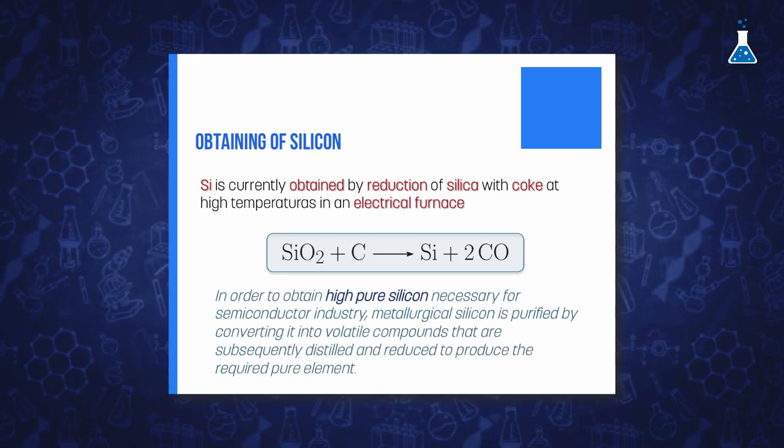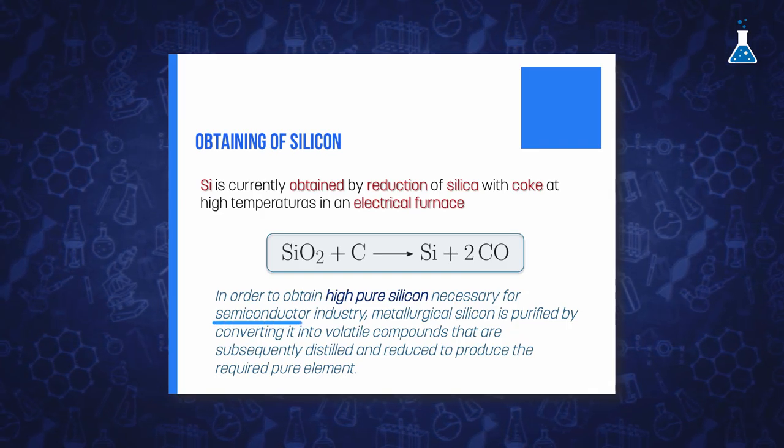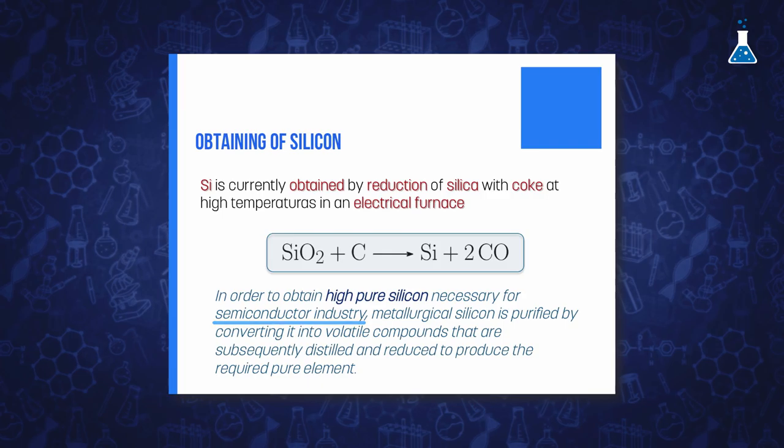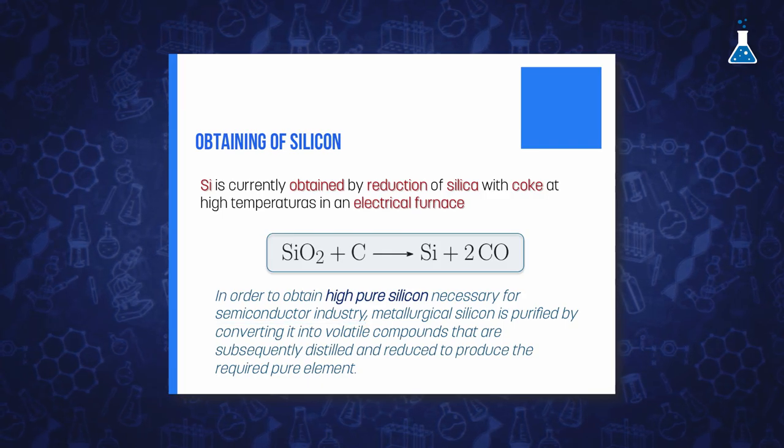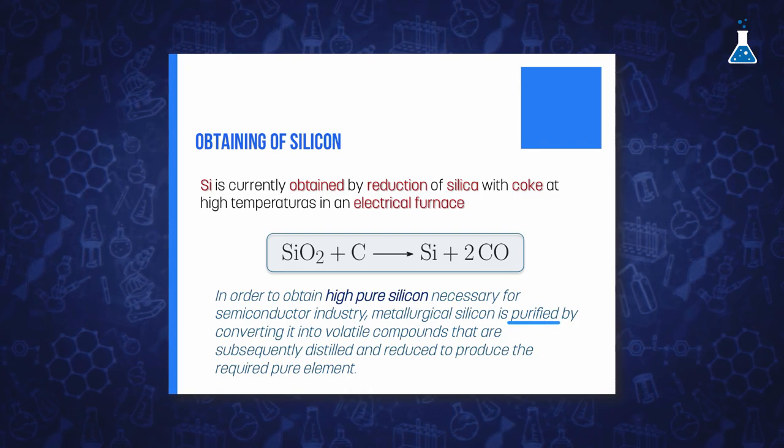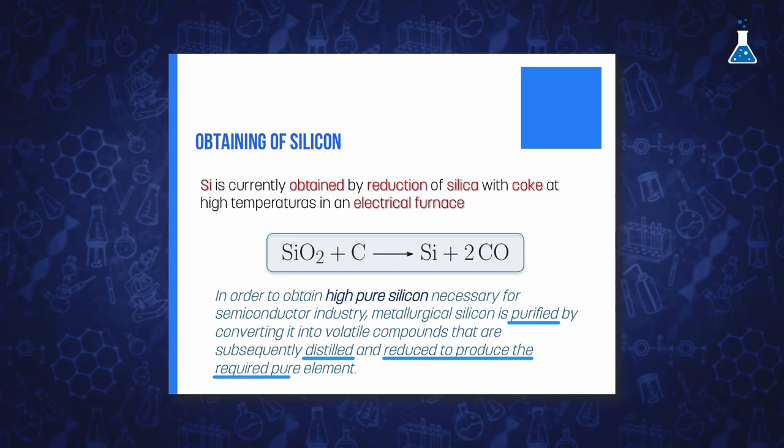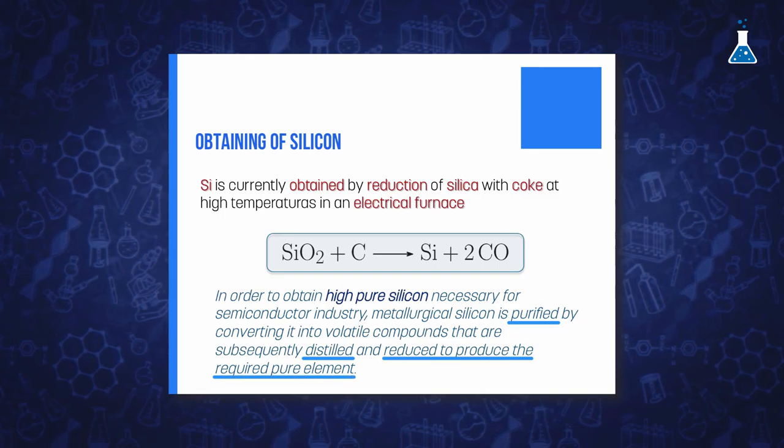However, due that one of the most important applications of silicon is in the semiconductor industry, it is necessary to obtain it in high purity. For that reason, it is usually converted to volatile compounds such as trichlorosilane, for subsequent purification by exhaustive fractional distillation, and final reduction with zinc or magnesium, and purification by zone refining.